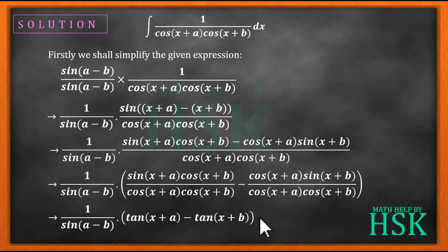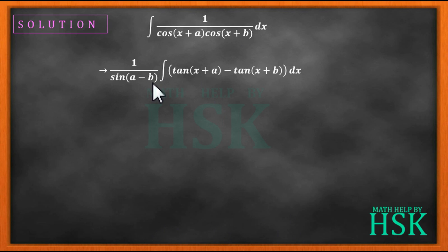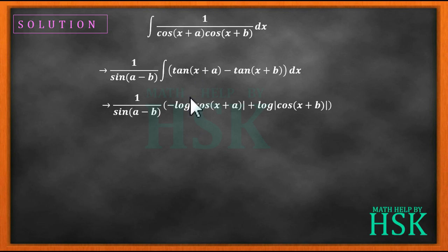Now we can integrate these two terms very easily. This integral can be written as 1 upon sin(a-b) times the integration of [tan(x+a) minus tan(x+b)] with respect to x. To solve further, we use the formula: integration of tan(x) equals minus log of cos(x). So integration of tan(x+a) equals minus log of cos(x+a).